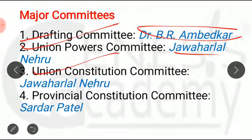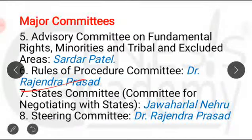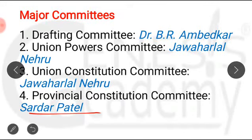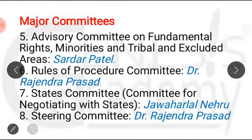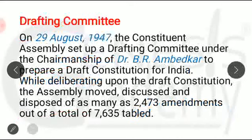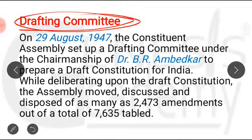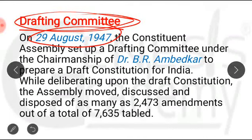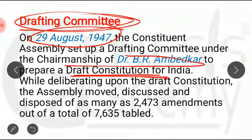The Rules of Procedure Committee was headed by Rajendra Prasad; the States Committee — for negotiating with states — by Jawaharlal Nehru; and the Steering Committee by Dr. Rajendra Prasad. So the eight important committees: Jawaharlal Nehru headed three committees — the Union Powers Committee, the Union Constitution Committee, and the States Committee. Dr. Rajendra Prasad headed two committees — the Rules of Procedure Committee and the Steering Committee. The Drafting Committee was constituted on 29th August 1947, and its function was to draft the Constitution for India.